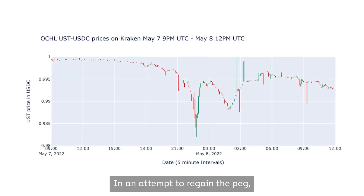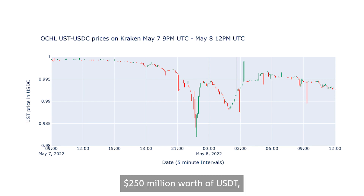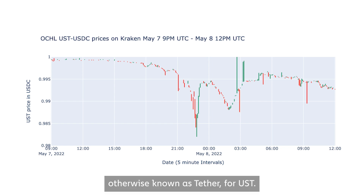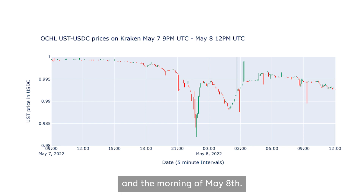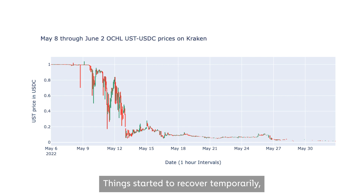In an attempt to regain the peg, the LUNA Foundation Guard and other peg defenders counteracted with swaps of over $250 million worth of USDT, otherwise known as Tether, for UST. These transactions occurred late into the evening of May 7th and the morning of May 8th. Things started to recover temporarily, but it was already too late.